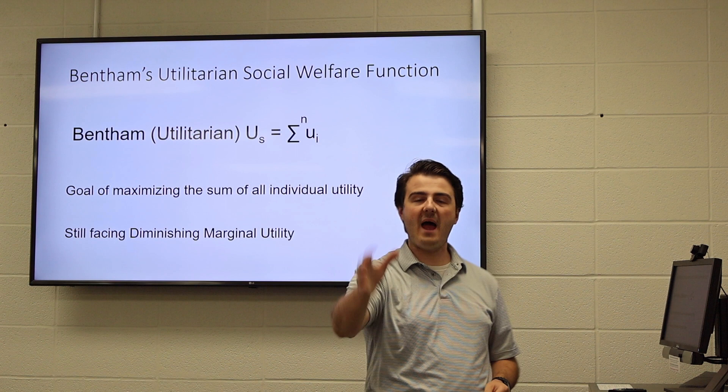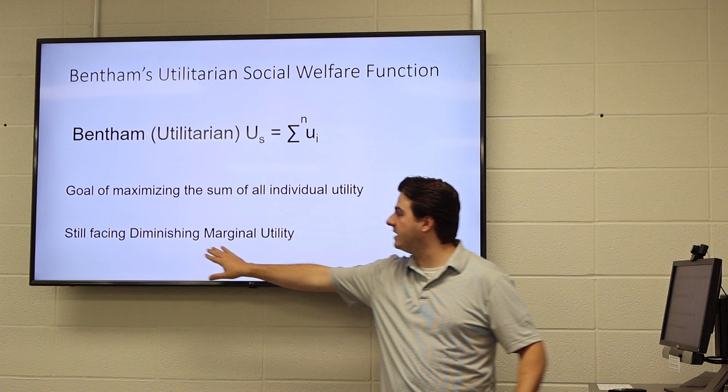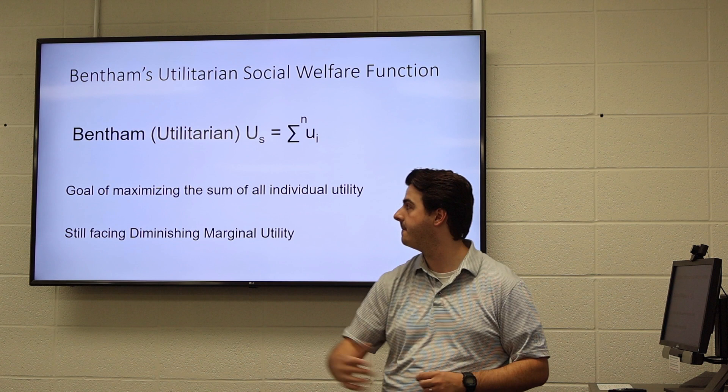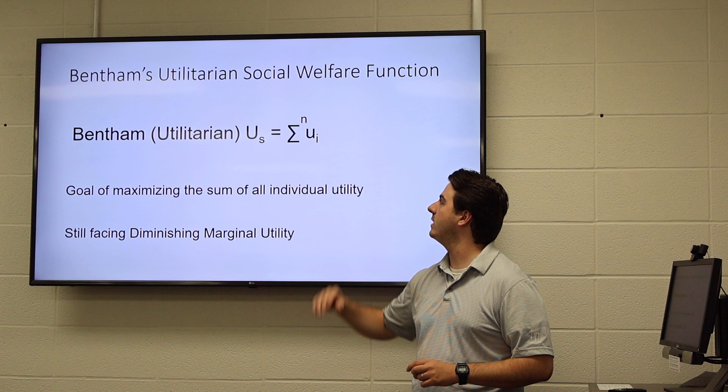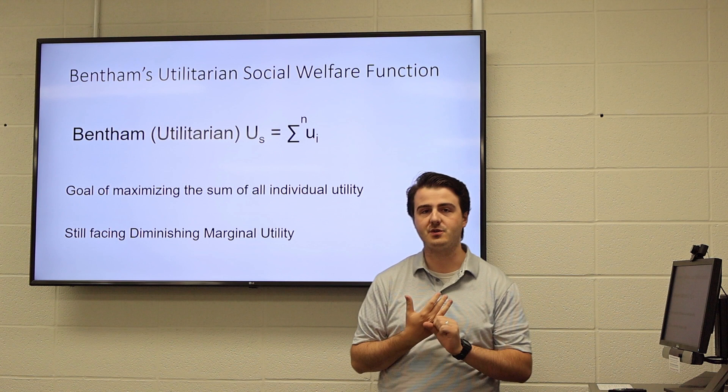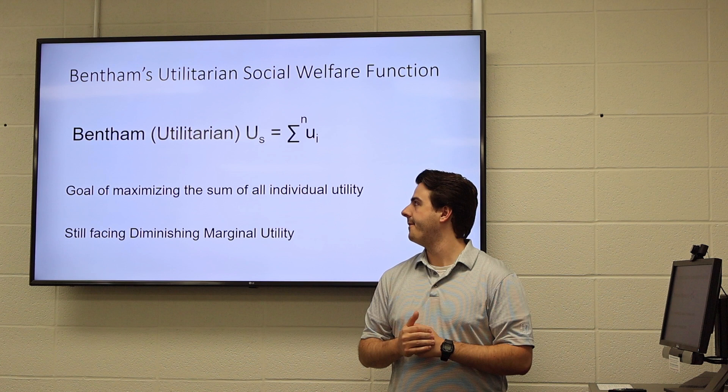We want to maximize total utility in our society, remembering that there is diminishing marginal utility. So if we can help out the people with the least, that will benefit our total utility more than helping out people that already have a lot. The utilitarians say we need to add up as much utility as we can — that's the best thing we can do. Maybe we see a problem with this: how do you measure personal utility? Might be a little tricky. But that's what Bentham has to say.